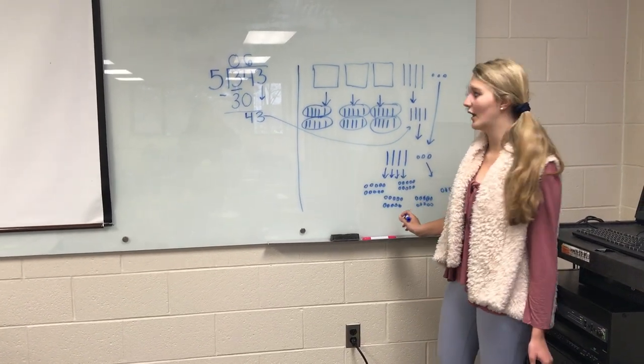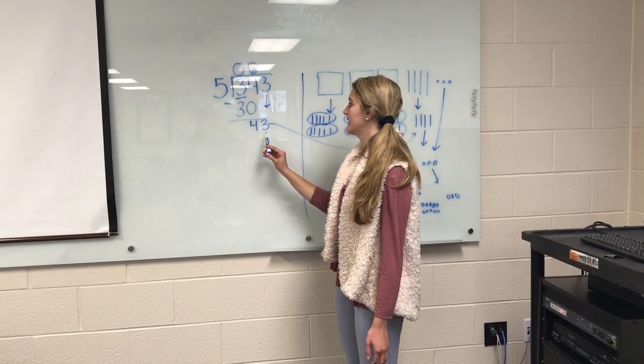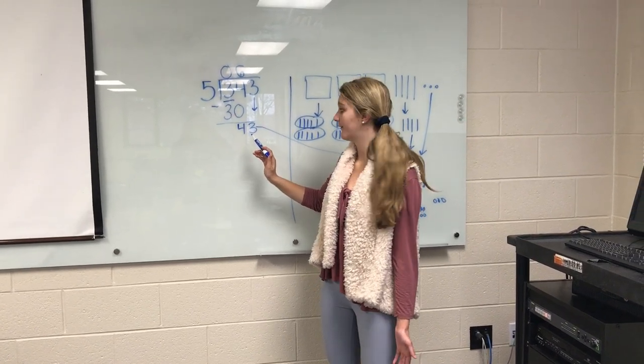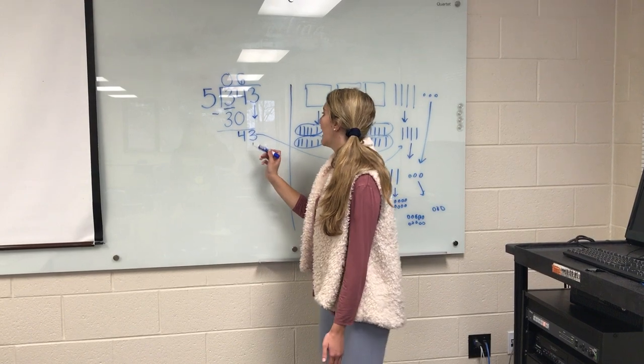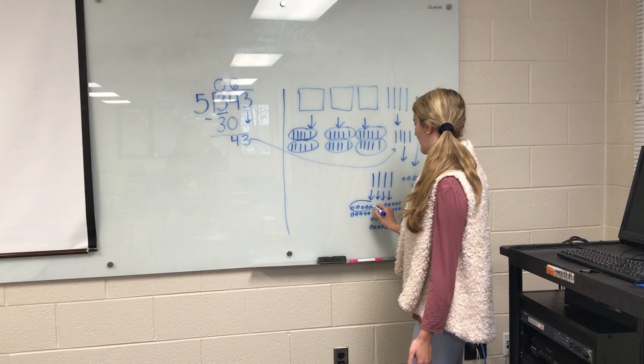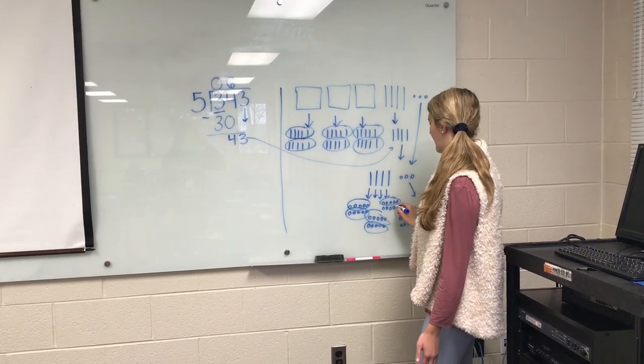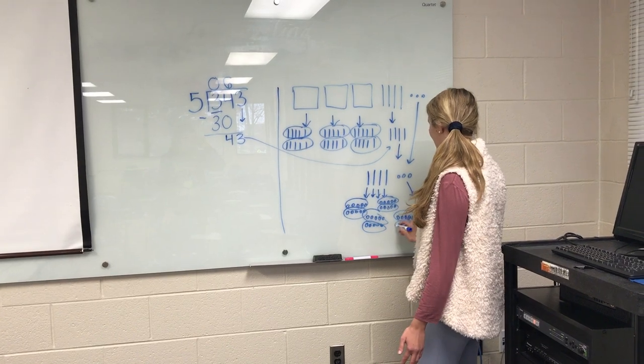Bring down these 3s. Now we have 43 ones, and we are going to ask ourselves, how many groups of 5 ones can I take out of 43 ones? That answer we are going to find by circling groups of 5 once again. So 1, 2, 3, 4, 5, 6, 7, 8.